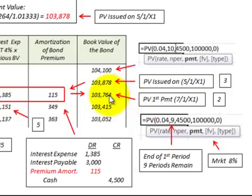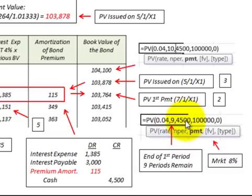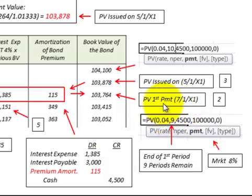The first thing we have to do is determine the present value here on July 1st. Using the Excel PV function, I put in the market rate of interest of 4% per semi-annual period and used nine periods. Normally we'd determine the present value on January 1st using 10 periods, but by using nine periods I can calculate the present value as of July 1st. The payment is $4,500 and the face value is $100,000, giving us a present value of $103,764.